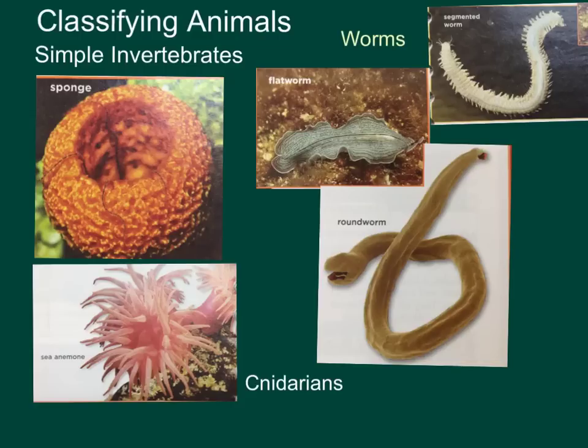I'm going to discuss the different types of invertebrates, and I'm going to split them into two groups. What you see here are called the lower invertebrates — they are more simple animals or simple invertebrates. They are sponges, cnidarians as you see at the bottom, and worms over to the right.